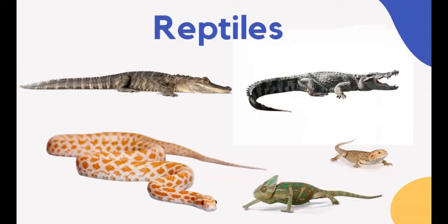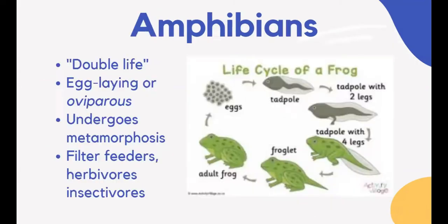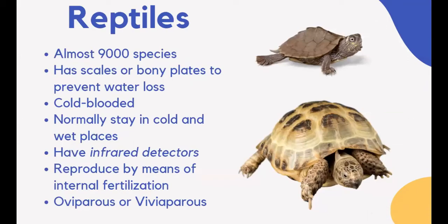Snakes, chameleons, lizards, alligators, and crocodiles are called reptiles. Reptiles are characterized by their body covering of scales or bony plates, which provide physical protection and prevent water loss. Similar to fishes and amphibians, they are cold-blooded — their temperature depends on the temperature of their surroundings. Reptiles develop ways to increase or decrease their body temperature to stay alive. Their mode of nutrition varies: some turtles are herbivores, while crocodiles, snakes, and alligators are carnivores. They reproduce by internal fertilization, and some reptiles lay eggs, making them oviparous.